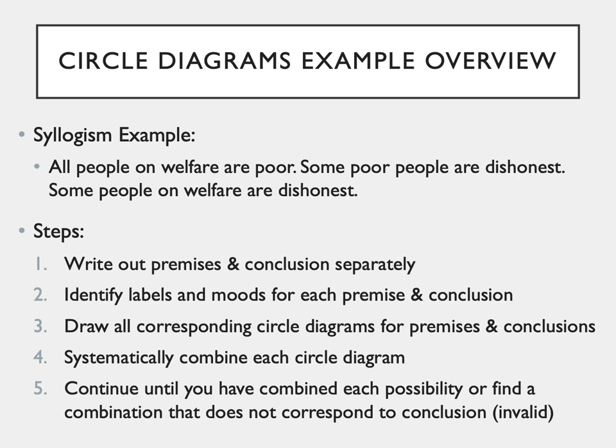We are going to use the syllogism example of: all people on welfare are poor; some poor people are dishonest; therefore, some people on welfare are dishonest. The steps we will cover start with writing out the premises and conclusion separately; then identifying labels and moods for each; third, drawing all corresponding circle diagrams; fourth, systematically combining each circle diagram; and lastly, continuing to combine until either all possibilities are covered or you find a combination that does not correspond to the conclusion, in which case the syllogism is invalid.